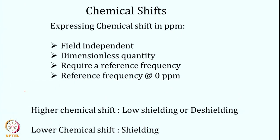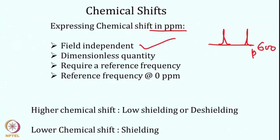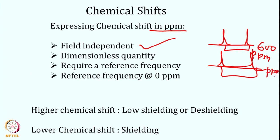Expressing chemical shift in PPM has merit in that it removes field dependence. Whether you record a spectrum on 600 MHz or 800 MHz, the PPM value of peaks remains the same — this was not the case when expressing chemical shift in hertz, where values differed at different fields. This field independence is the major advantage of defining chemical shift in PPM.